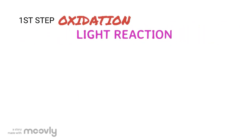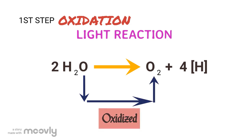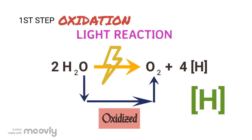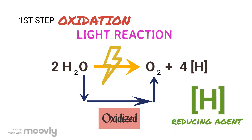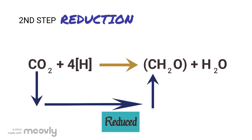For the first step, we have the light reaction taking place when the oxygen in water is oxidized by the light energy — each here represents a reducing agent. For step 2, we have the hydrogen reducing the carbon in carbon dioxide, which is a type of dark reaction.